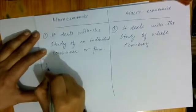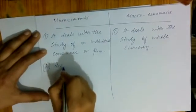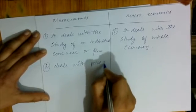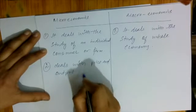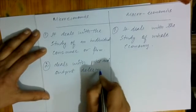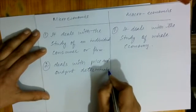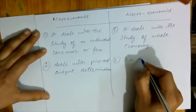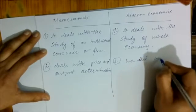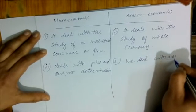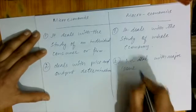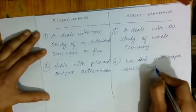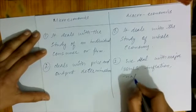The second difference: Microeconomics deals with price and output determination. In all of microeconomics, we determine price or output. Macroeconomics, on the other hand, deals with major issues of the whole economy, like national income, etc.